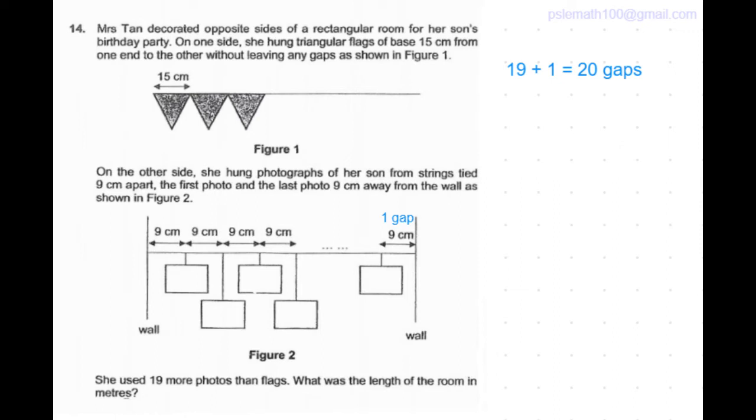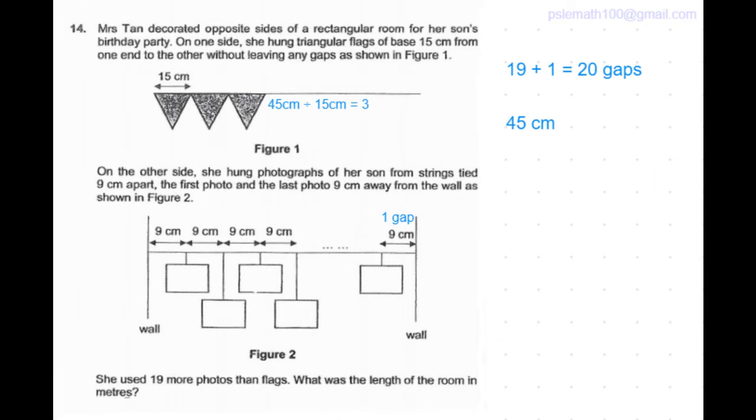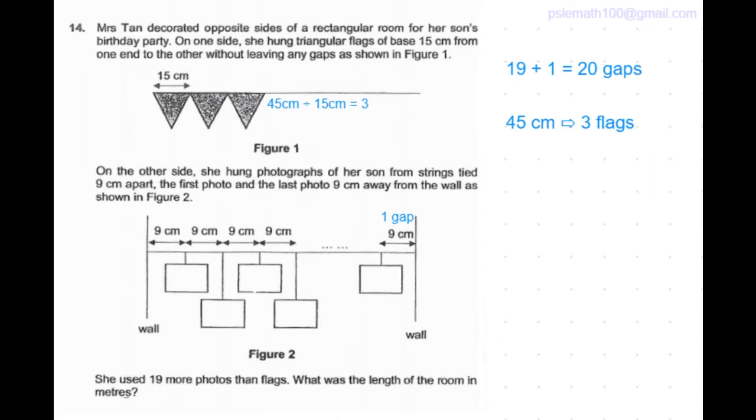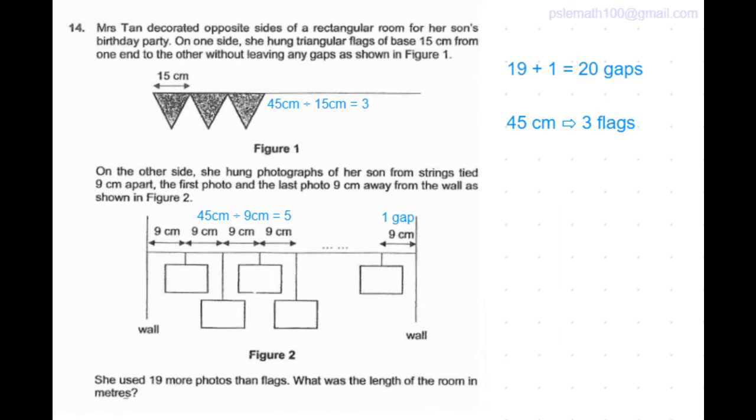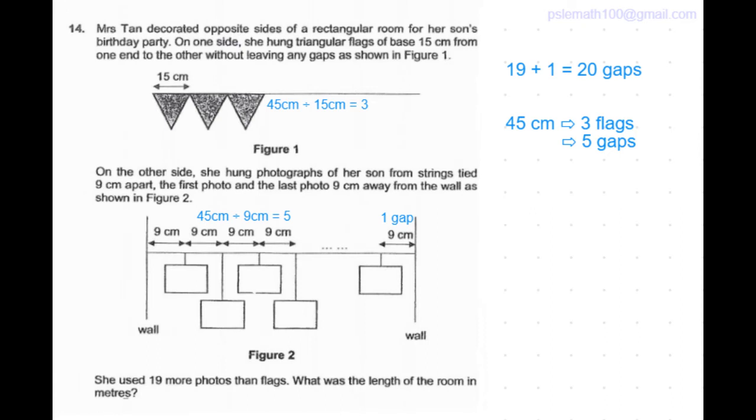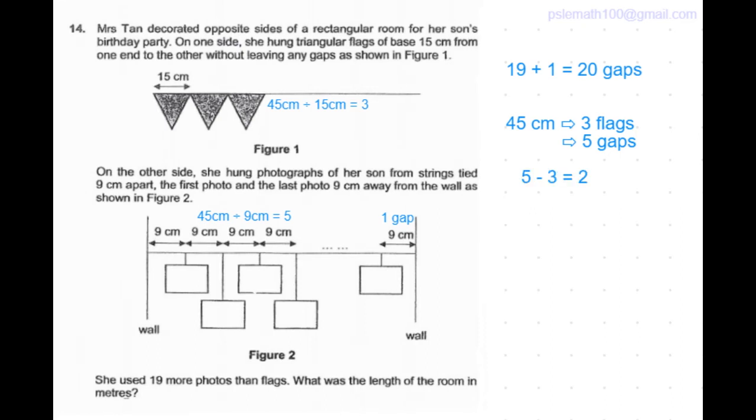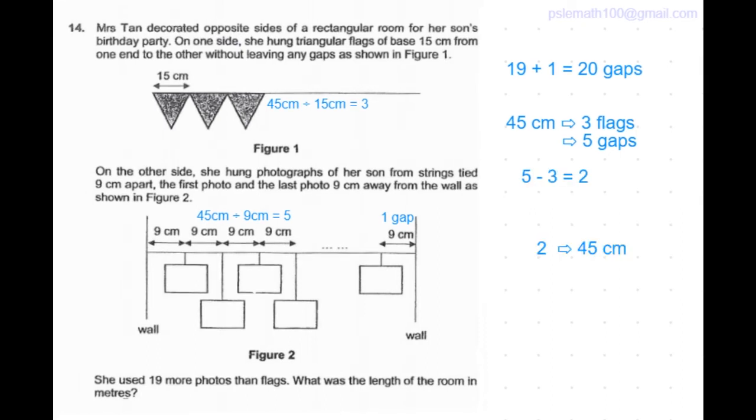The flags are every 15 cm and the gaps are every 9 cm. So the lowest common multiple between 15 and 9 is 45. For every 45 cm there are 45 divided by 15, which is 3 flags. And for every 45 cm, 45 divided by 9 is equal to 5 gaps. 5 minus 3 is equal to 2. So there were 2 more gaps than flags for every 45 cm.